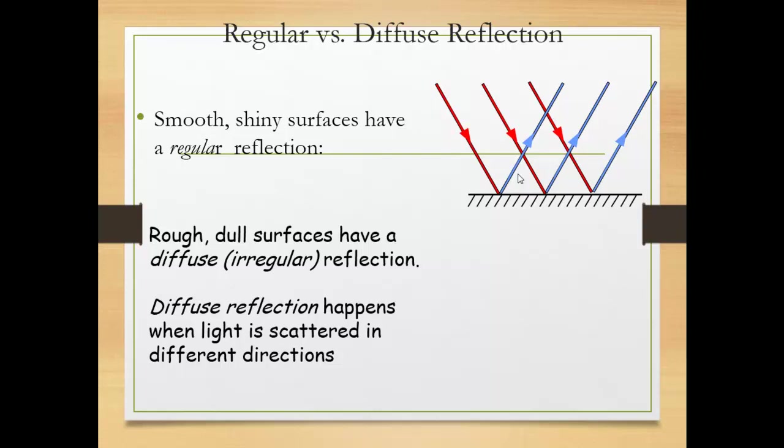Rough or dull surfaces have a diffuse or irregular reflection. Irregular reflection or diffuse reflection happens when light is scattered in different directions. When the light falls on a rough surface, it reflects with a different angle.